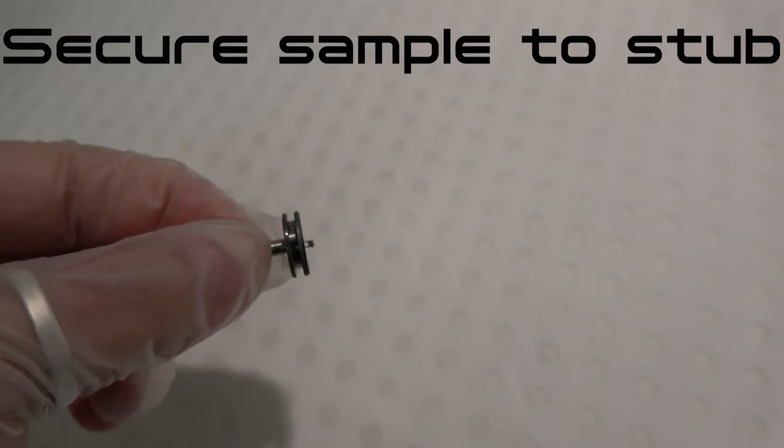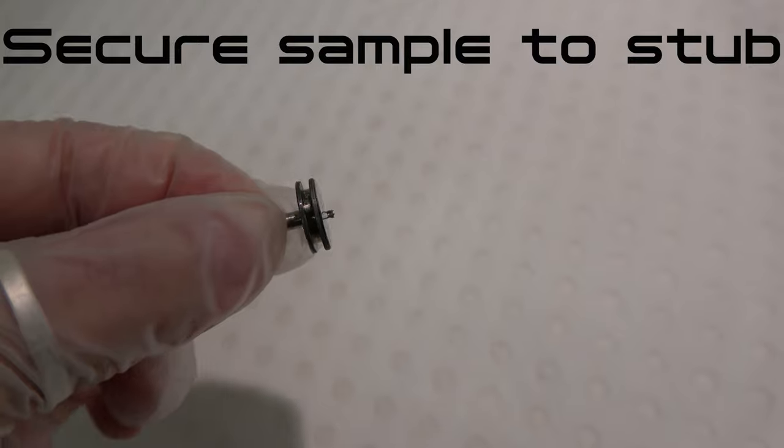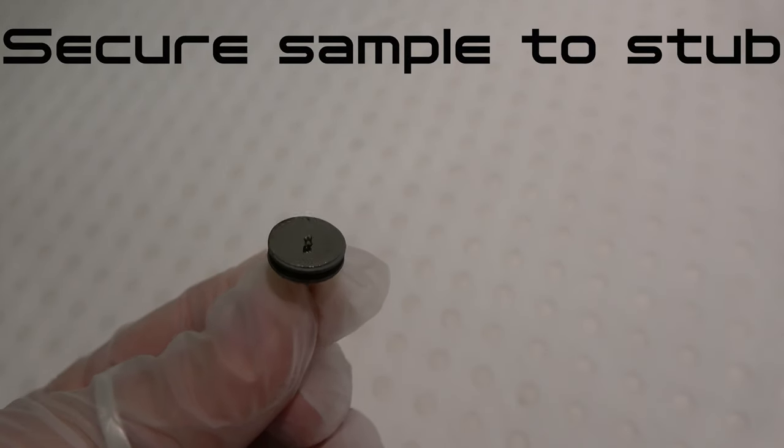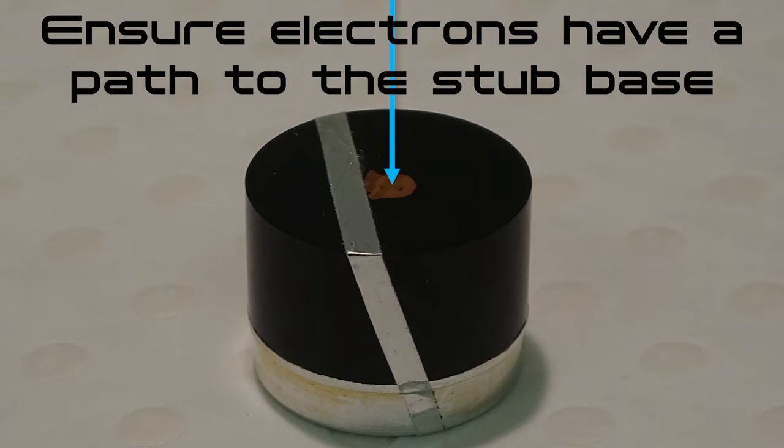When mounting samples for SEM, our main goals are to secure the sample to the SEM stub so that it does not move during examination in the microscope, and to ensure that the negative charge generated by the electron beam has a pathway away from the sample surface to the conductive stub base.